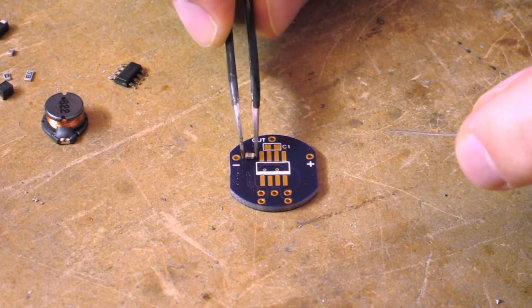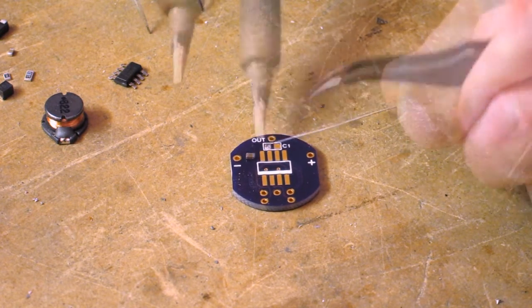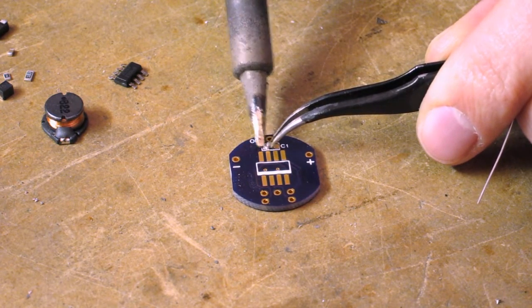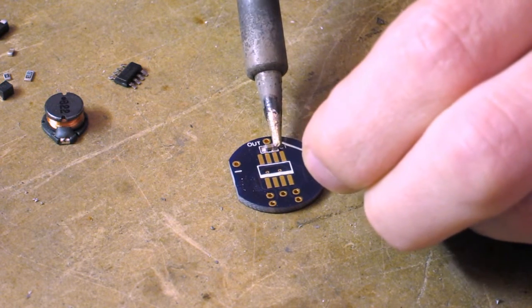Next, solder the component C1. Use a soldering iron to put solder on one of the pads, then place the component and reheat that solder to allow the component to settle onto the pads. Then solder the other side.